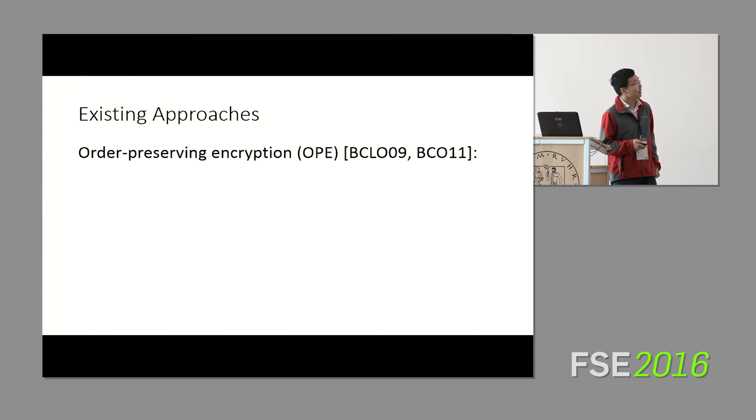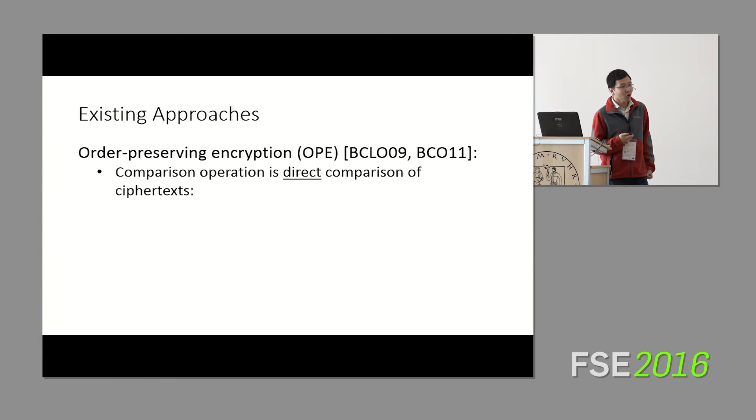Let's move all the way to the other end of the spectrum, where we actually have something that can be used, can be implemented, and is practical, which is order-preserving encryption. This was what started this whole line of work. This was two results by Boldyreva et al. from 2009 and 2011. In an order-preserving encryption, it's basically the same as an order-revealing encryption, except we impose an additional structural constraint on the ciphertext space. Namely, that the ciphertext space is numeric, and the comparison operation that you do on...